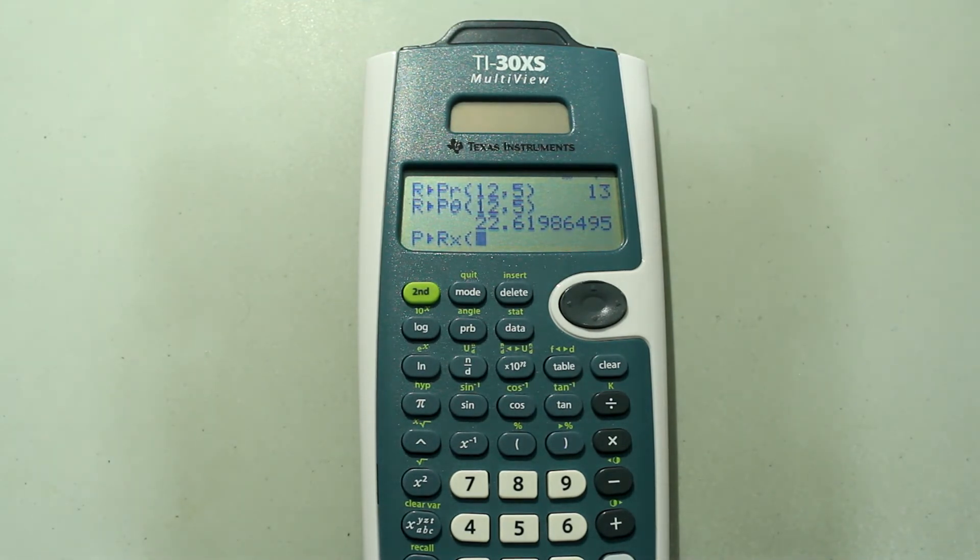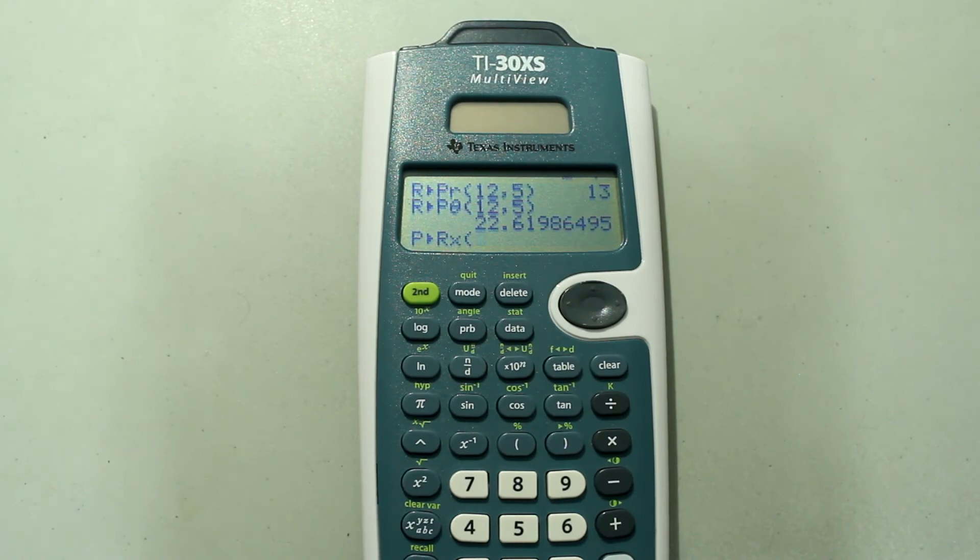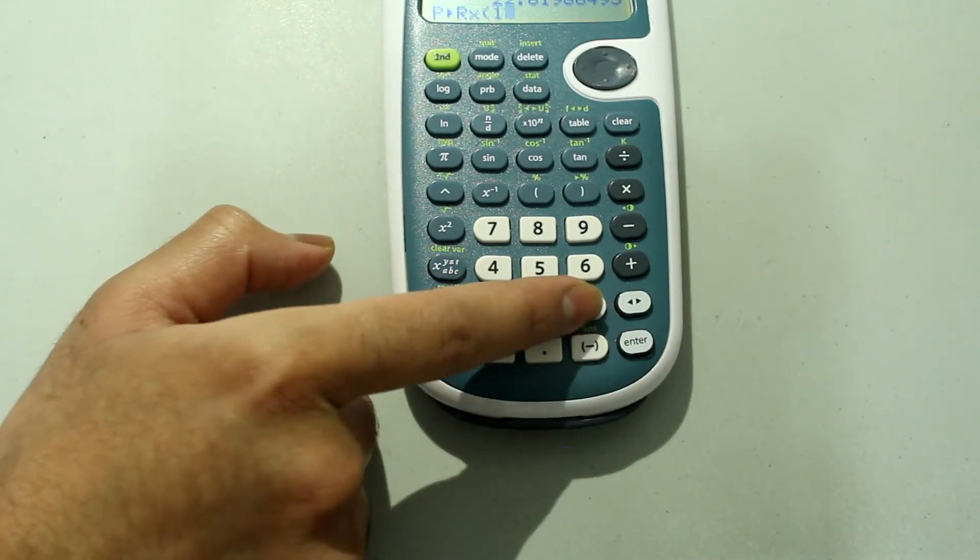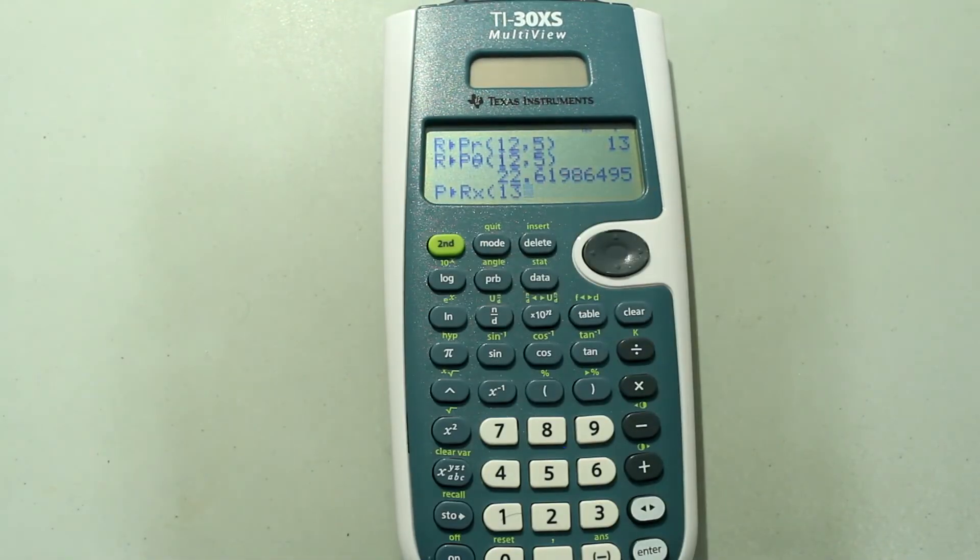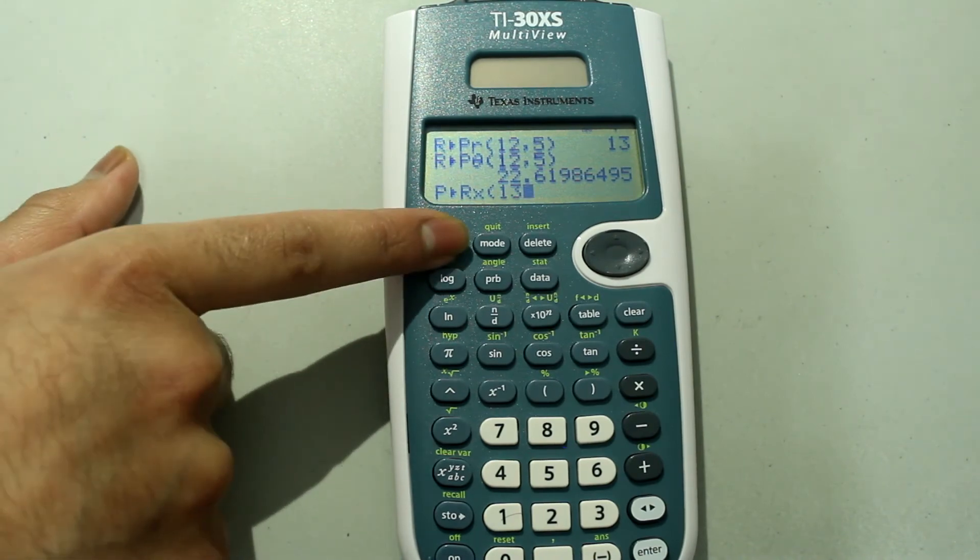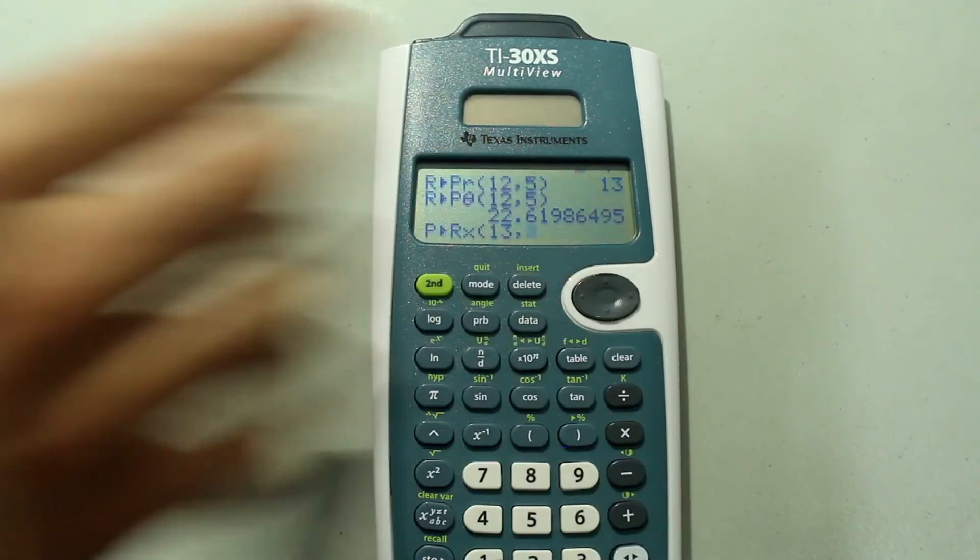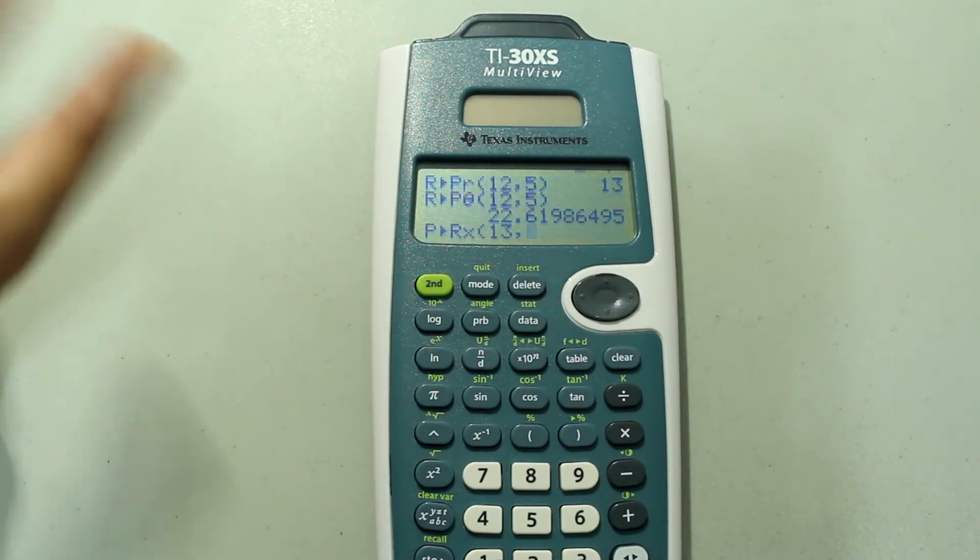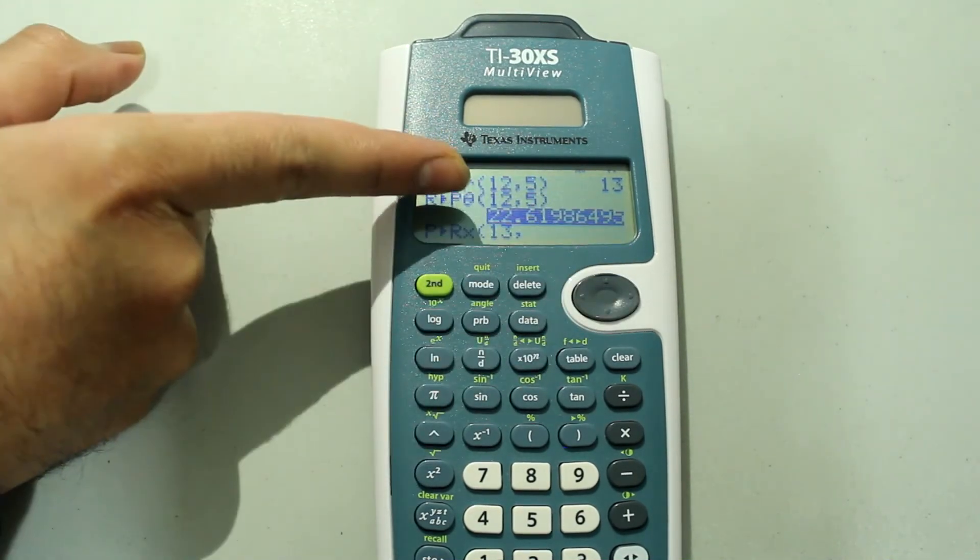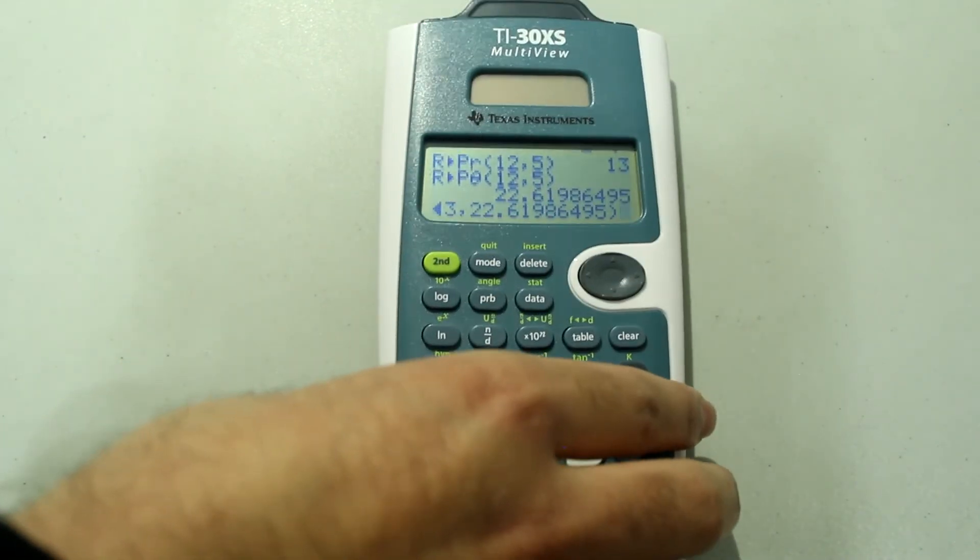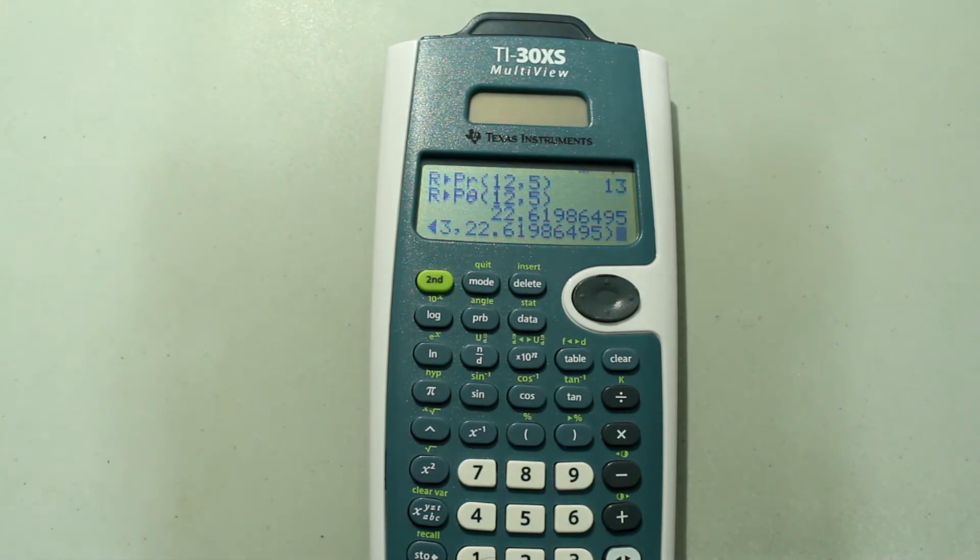So the polar input has to be in the form of radius comma the theta value. So the radius we know is 13, so just press 13 on the number pad. This is what I have so far. Then press 2nd and the decimal button to choose comma. And now, since I'm working with this particular example, I'm just going to go back and choose this exact angle just by arrowing up and pressing enter, and close off the parentheses.